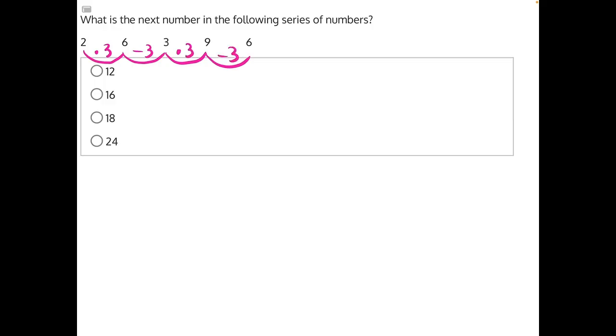So now we've uncovered the real pattern, which is an alternating geometric and arithmetic pattern. So now what we need to do is multiply 6 by 3 to get the next number in our series, and 6 times 3 would give us 18, making answer choice C our correct answer.